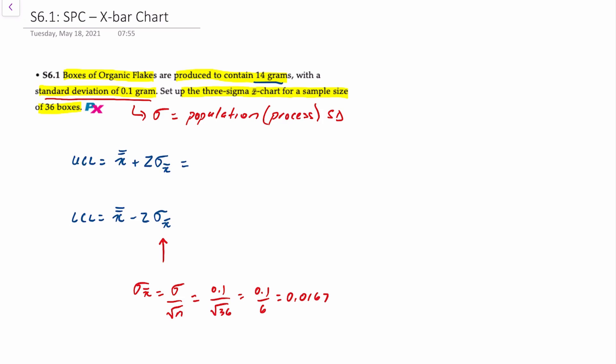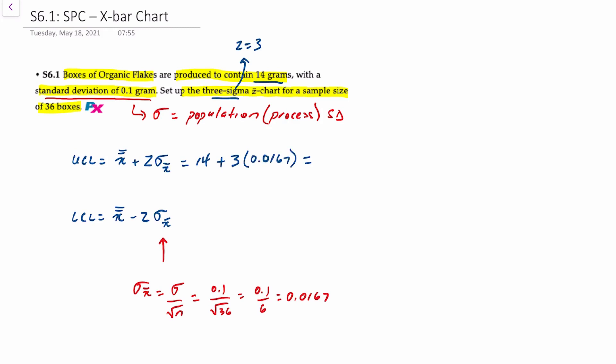We know that X-bar-bar is 14 grams, so the upper control limit is equal to 14 plus, we want a three-sigma control chart. Remember that three-sigma just means three standard deviations so Z must be equal to three. So we're going to add three times 0.0167, which gives us an upper control limit of 14.05 grams. And then the lower control limit is 14 minus three times 0.0167, which gives us an LCL of 13.95 grams.